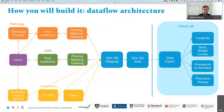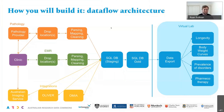From there, we'll have a gold quality-controlled database, which forms the foundation for the virtual lab and the analysis environments, where users — PhD students, etc. — will be able to export a subset of that data. And for the duration of this project we'll have four exemplar labs looking at animal longevity, body weight curves, prevalence of different disorders, and pharmacotherapy data pulled from all these disparate data sources across Australia.